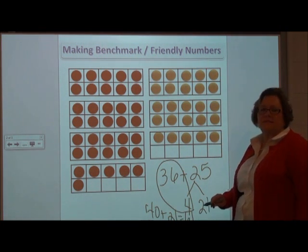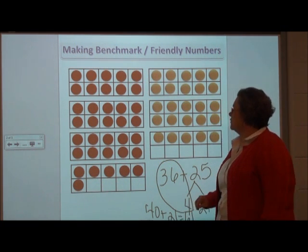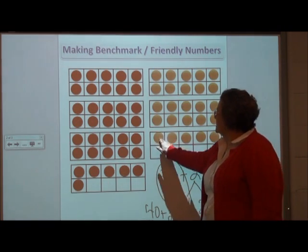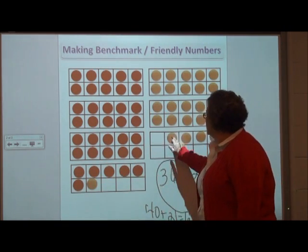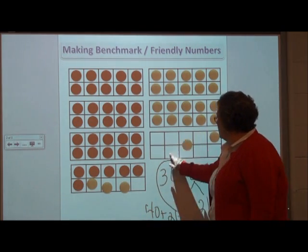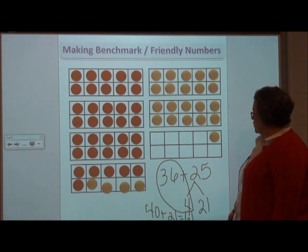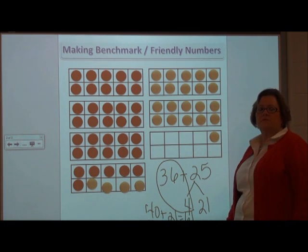So, 36 and 25 is 61. To show that it also works with the 10 frames, I can take 4 of these and move them and make the number 40. Now I have 40 and 21, which is equal to 61.